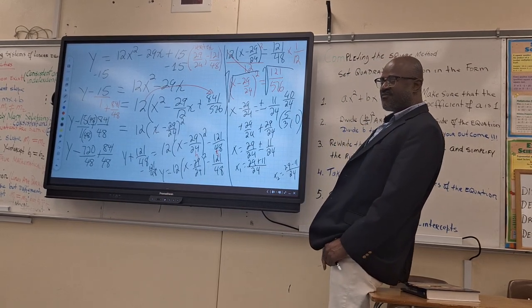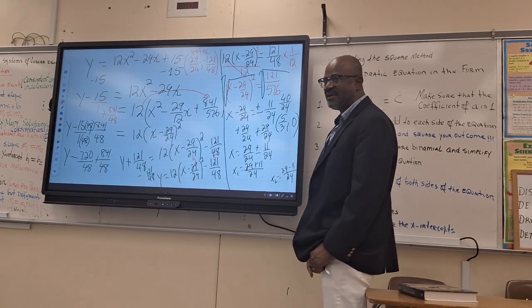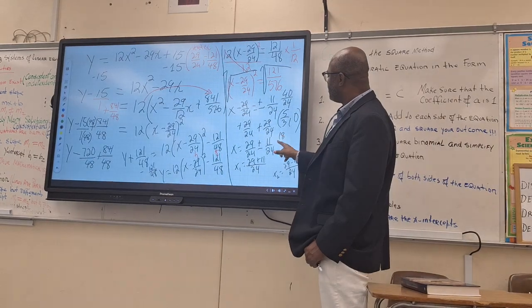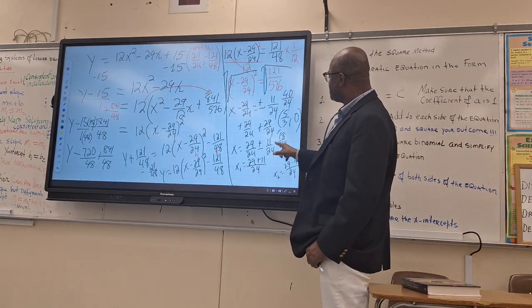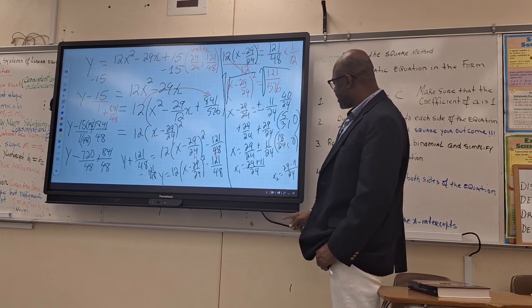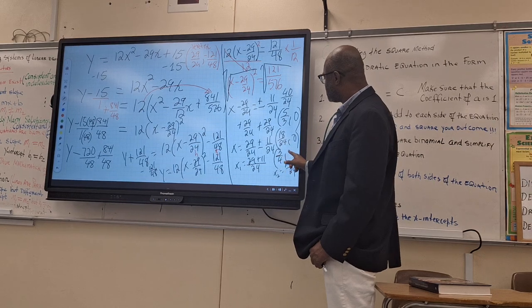I will find the other one. 29 minus 11. What is that? 18. 18 over 24. What is the greatest common factor? 6. That will give you what? 3 over 4, comma 0.